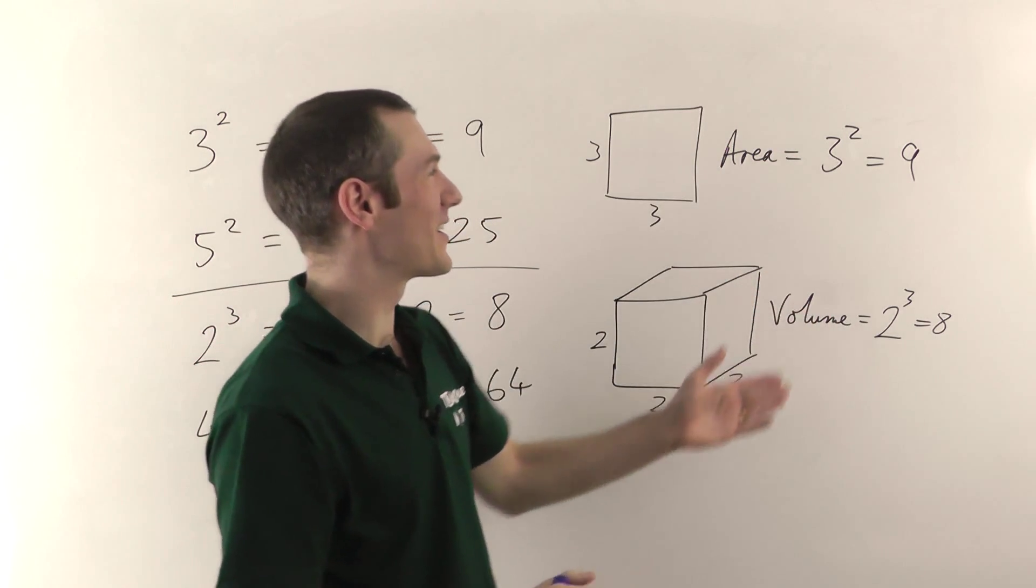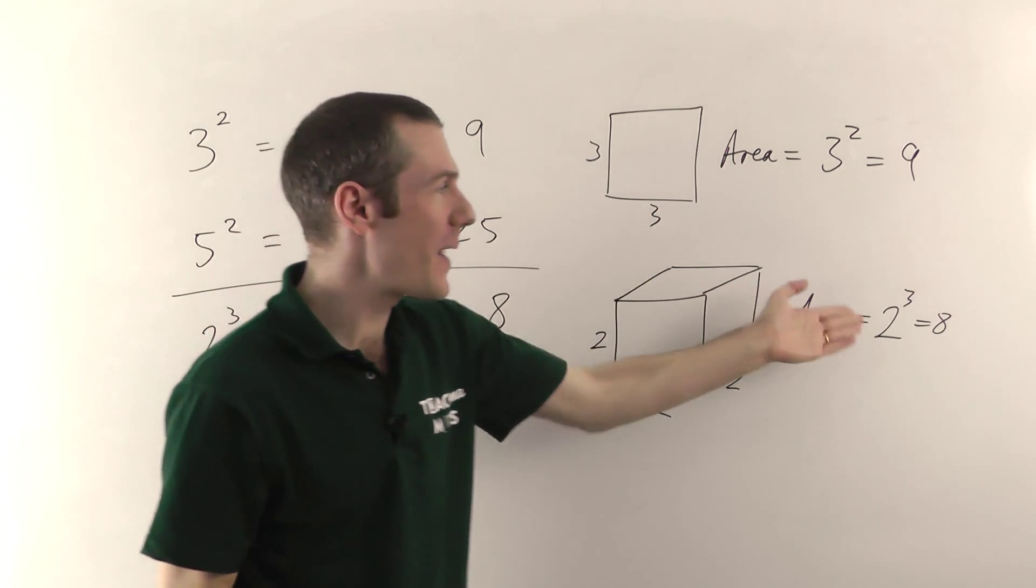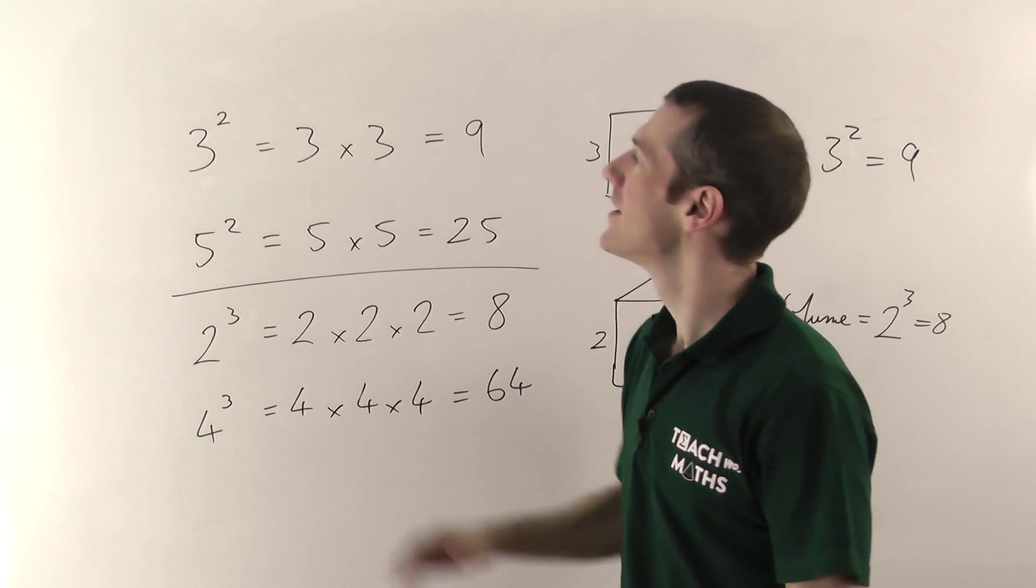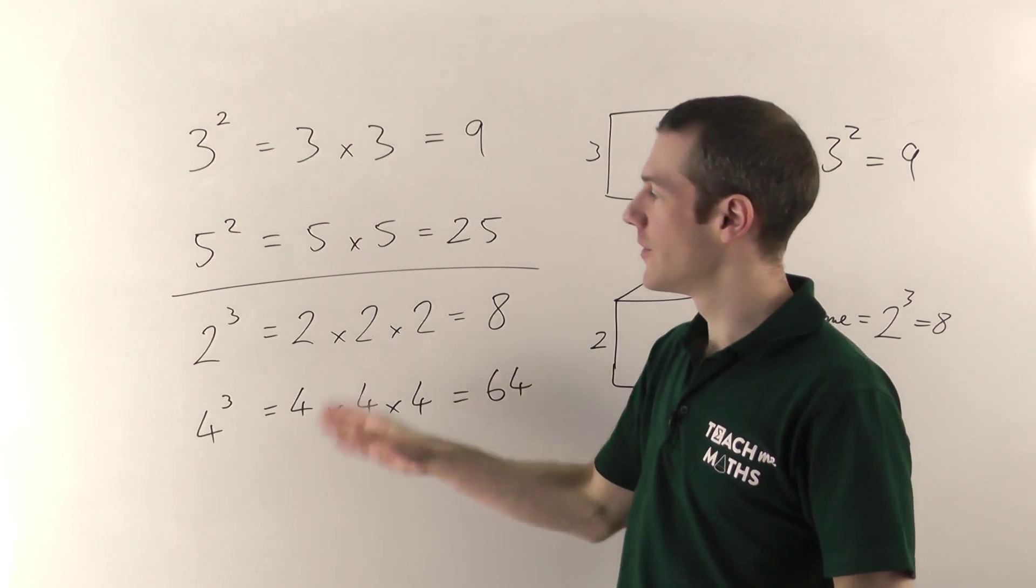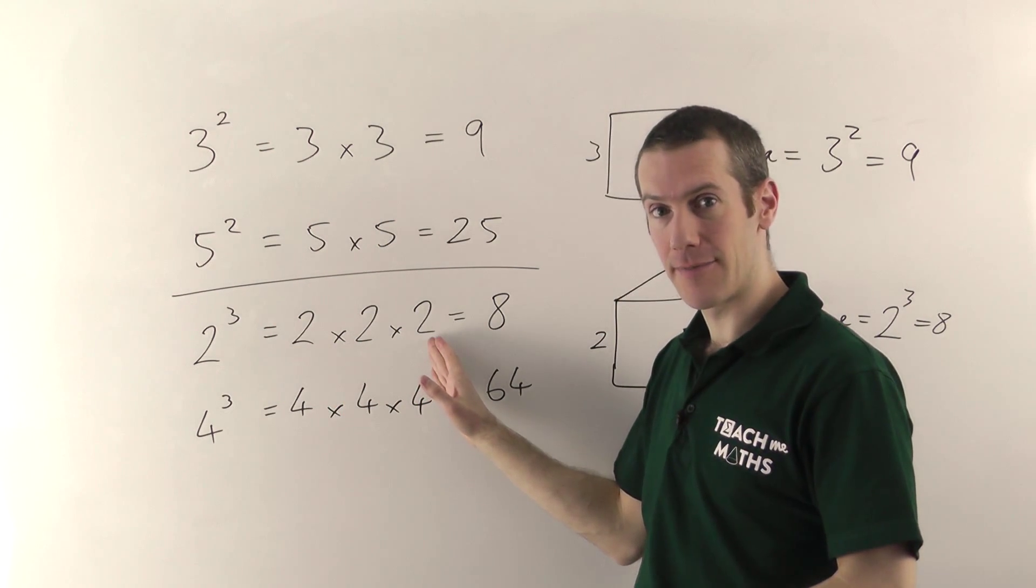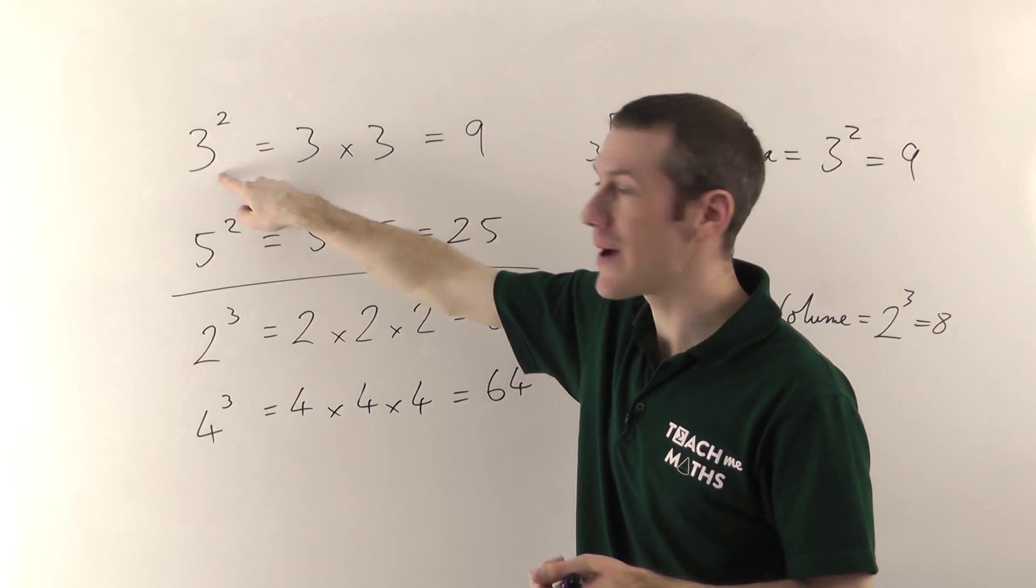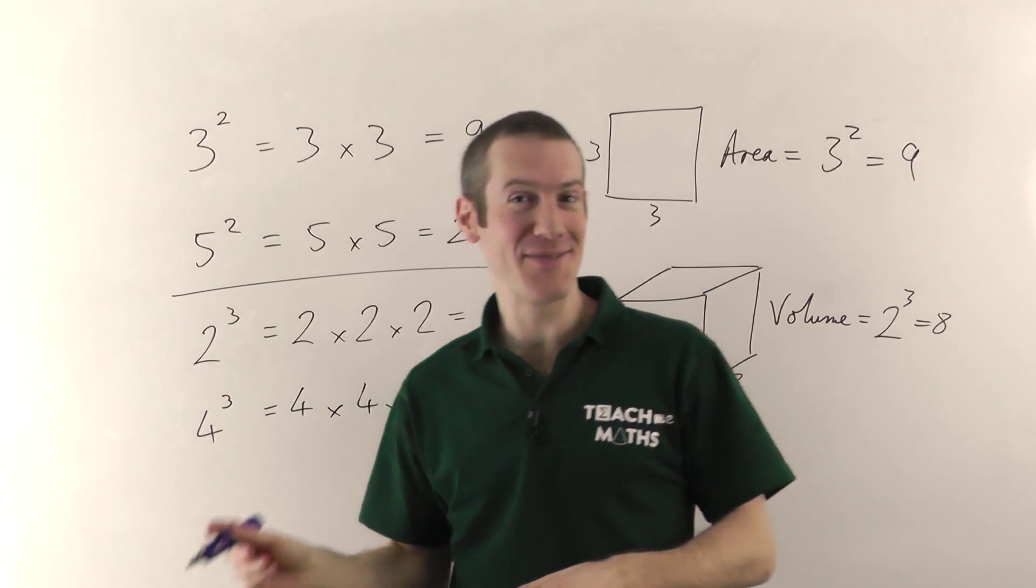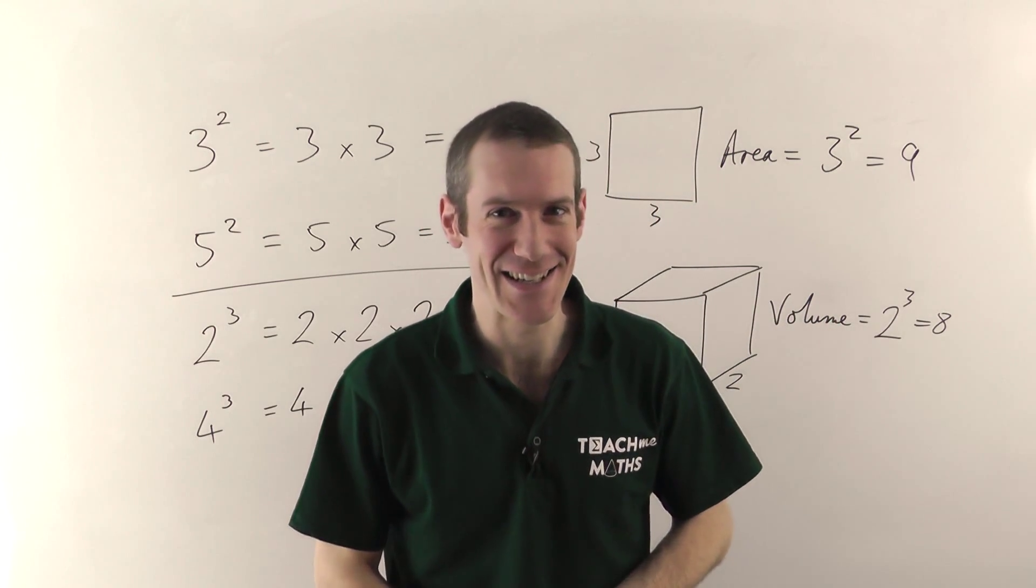So the reason it's called cubing is because it gives you the volume of a cube. So that's why it's squaring and cubing. Squaring because it gives you the area of a square, and cubing because it gives you the volume of a cube. But it's very straightforward in practice. Squaring, multiply by itself. Cubing, three of them multiply them together. But don't be tempted to multiply the power by the base number. That always gives you the wrong answer. Alright, so my name is Jonathan Hicks, and you're watching Teach Me Maths.